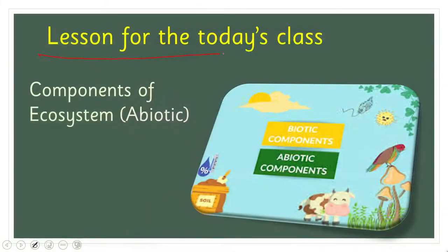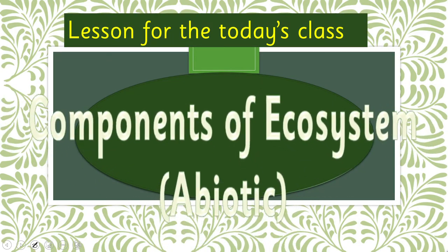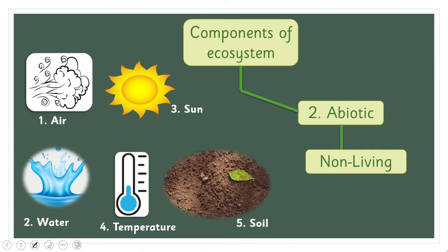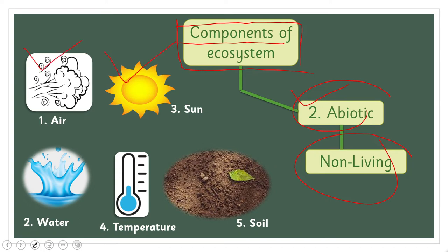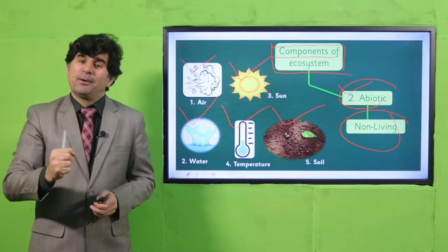I'm going to the next slide showing us about today's class. We have already read the biotic factors. Today, we will know about the abiotic components. The components of the ecosystem which are abiotic — component number one is air, number two is sun, number three is water, number four is temperature, number five is soil. So my dear students, these are the five abiotic components.